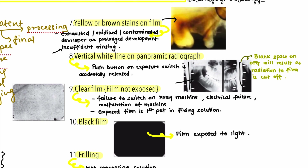The next error is a clear film, where the film is not exposed at all. This can be due to failure to switch on the x-ray machine, electrical failure, or machine malfunction. Another reason is placing the film into the fixing solution first instead of the developer — always follow the correct processing order: developer first, then fixer.